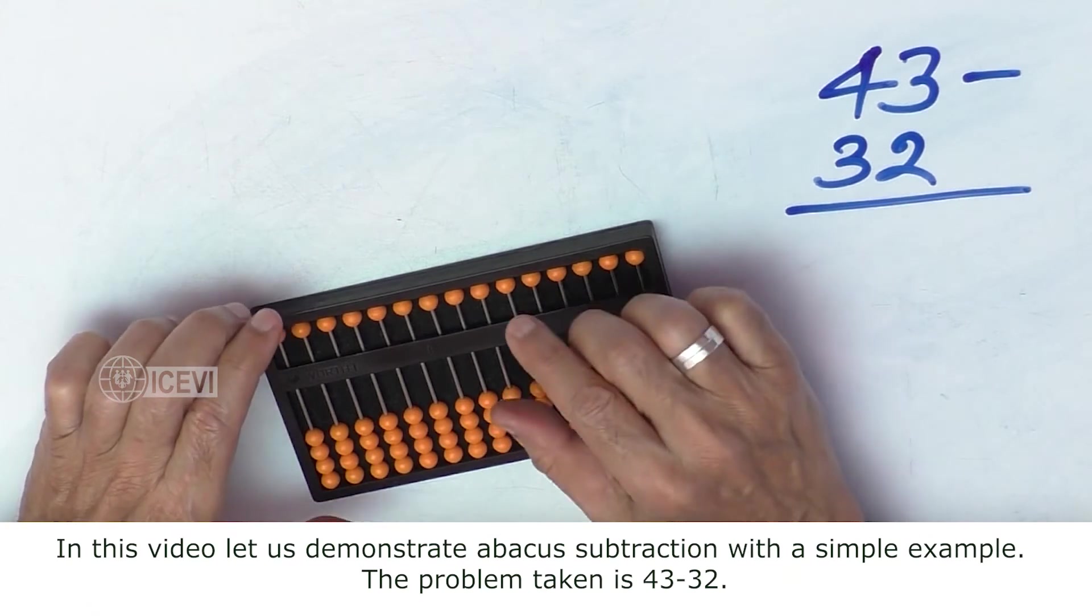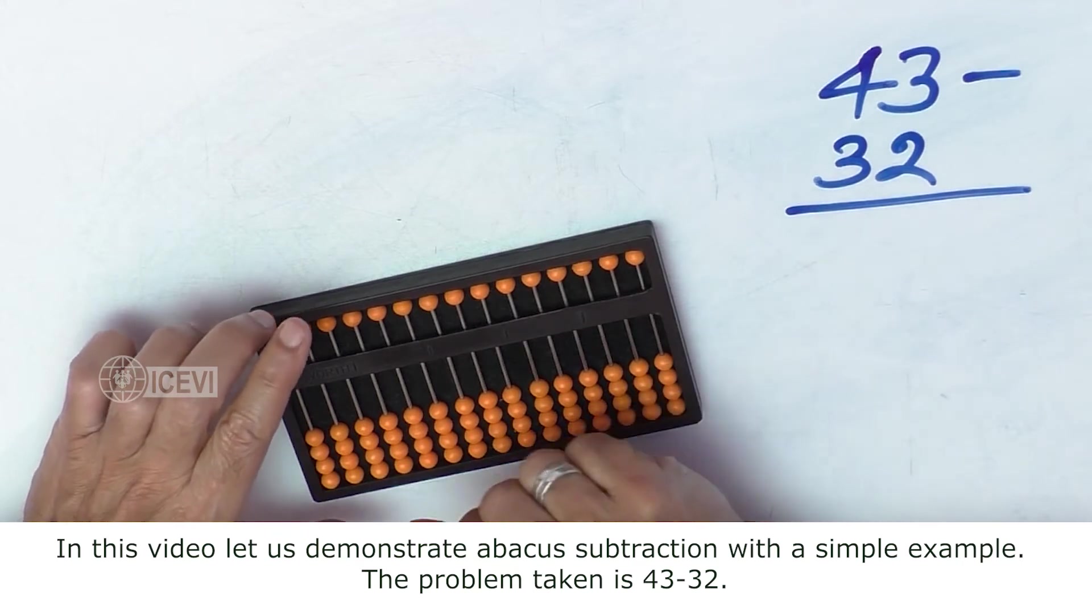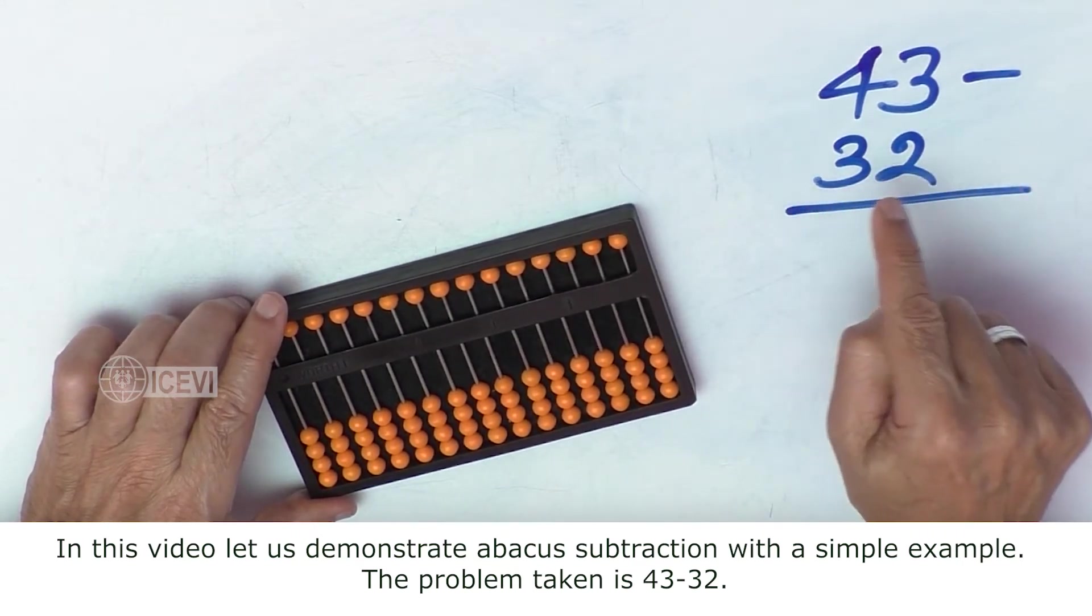In this video, let us demonstrate the Abacus Subtraction with a simple example. That is 43 minus 32.